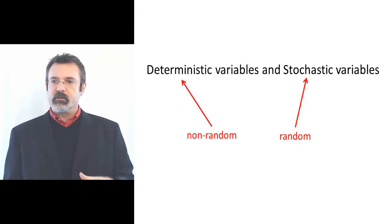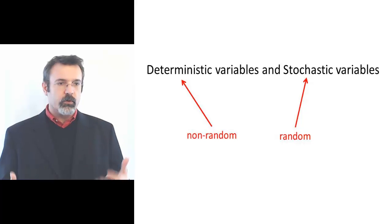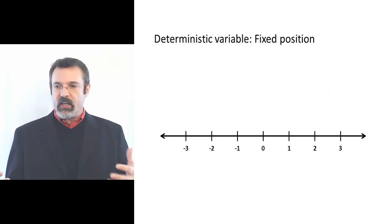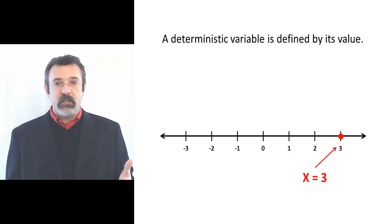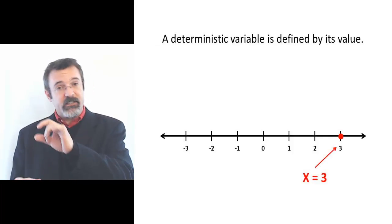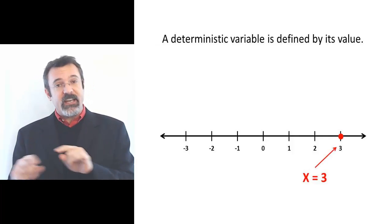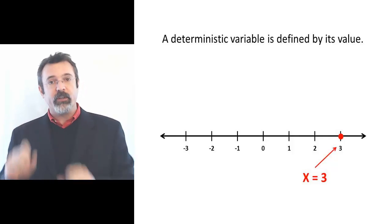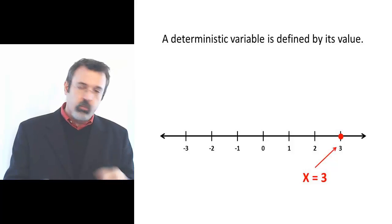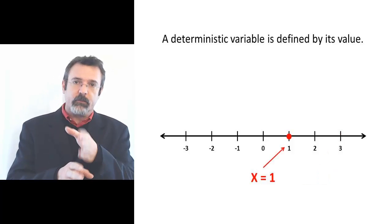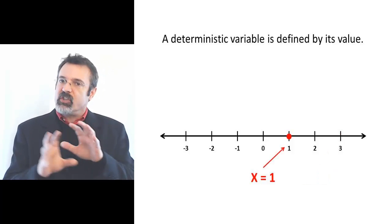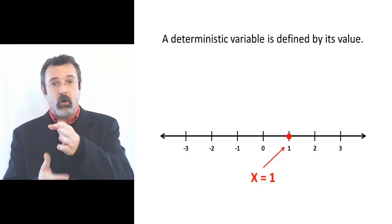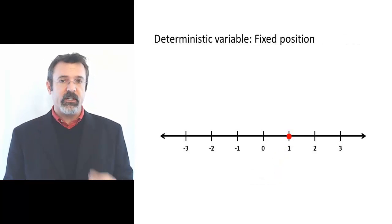Deterministic variables are the first sorts of variables you learn about in school. When you see a number line and the teacher says find three on the number line, we can say here is three. If we say x equals three, it means that x is located at this point on the number line. The x doesn't move — when x is one, it sits here at one on the number line. This is a deterministic variable.